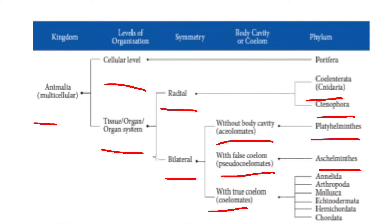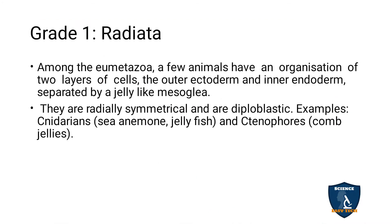This is the overall classification — you can see the cellular level, symmetry level, body cavity level, and the phylum level. Now we are going to discuss Grade 1: Radiata. In Radiata, Eumetazoans — the true metazoan multicellular animals — form two layers of cells.